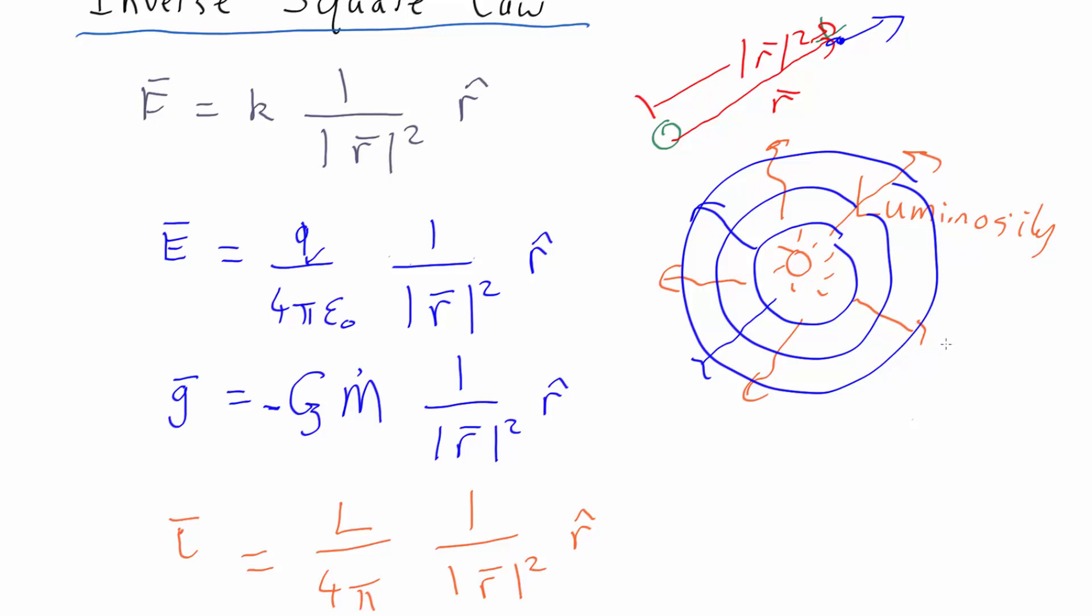That's why when things are far away you see fewer photons per unit area. It's not that there are fewer photons - there are just as many photons a long way away as there are close, they're just spread over a bigger volume.